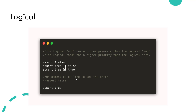Next, we will see logical operators, where you will be able to perform operations on Booleans. Here we are performing NOT, OR, and AND. Logical NOT has higher priority than logical AND, and logical AND has higher priority than logical OR. If you uncomment the line 'assert false', it will throw an exception because that particular line is not true.